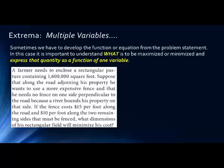I'm going to read the last sentence first. It says if the fence costs $15 per foot along the road and $10 per foot along the two remaining sides, what dimensions of this rectangular field will minimize cost? So I know I'm looking for the dimensions of a rectangle and I'm looking to minimize the cost. The first thing I'm going to do is draw a rectangle, write minimize cost next to it, and then go back and read each sentence. A farmer needs to enclose a rectangular pasture containing 1,600,000 square feet. Square feet is area. So my rectangle has an area of 1,600,000.